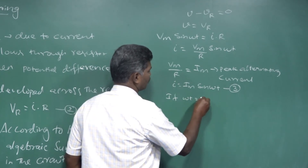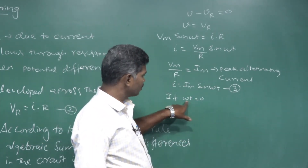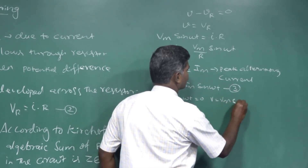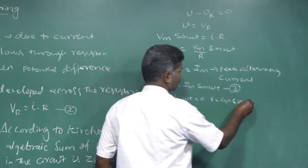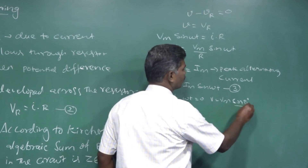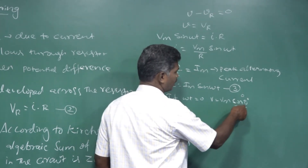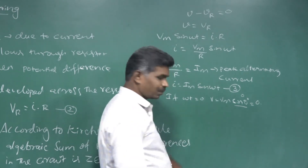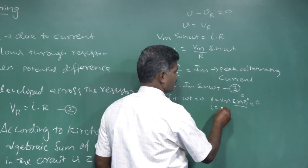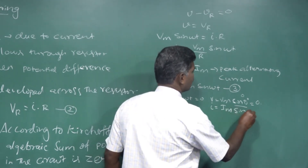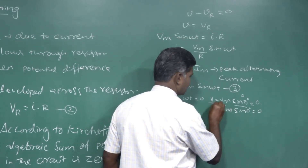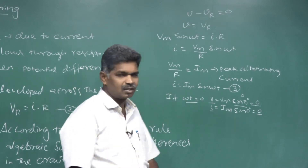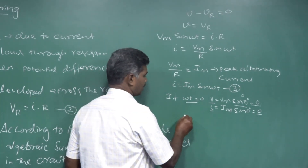Now we draw the waveform diagram based on V = VM sin(ωt) and I = IM sin(ωt). For alternating current, it varies from 0 to 360 degrees (0 to 2π). If ωt = 0, substituting into both equations: V = VM sin(0) = 0, and I = IM sin(0) = 0. So at ωt = 0, both instantaneous voltage and current are zero.